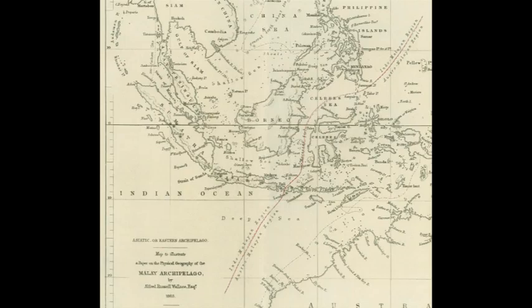The Wallace Line, or Wallace's Line, is a faunal boundary line drawn in 1859 by the British naturalist Alfred Russel Wallace, that separates the ecozones of Asia and Wallacea, a transitional zone between Asia and Australia. West of the line are found organisms related to Asiatic species; to the east, a mixture of species of Asian and Australian origin is present.